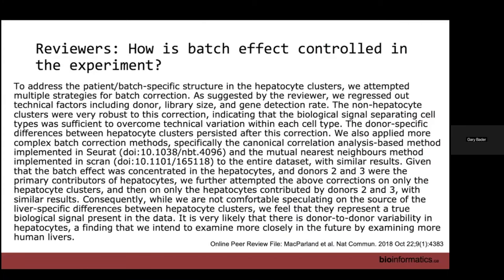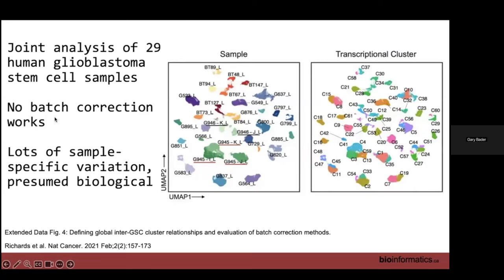Reviewers asked us to prove that that was not a batch effect. The main argument we used is that we tried lots of different batch correction approaches and tried to regress out all sorts of technical factors like the sample, the library size, and the gene detection rate. No matter what we did, it didn't change the result — those hepatocytes were never pushed together. While we can't prove it's not a batch effect, we felt it was likely that the donor variability was due to biological variability, and reviewers were comfortable with that.